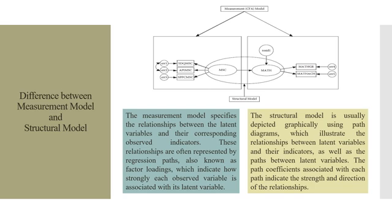What is the difference between measurement model and the structural model? The measurement model specifies the relationship between the latent variable and their corresponding observed indicators. So these are the corresponding observed indicators often represented by the regression path, also known as a factor loading. These are known as factor loadings, also known as outer loadings, which indicate how strongly each observed variable is associated with its latent variable, and these are the error terms. We have already discussed this thing in my previous video. I will request all my viewers to kindly refer my previous video to understand the flow of this lecture series.